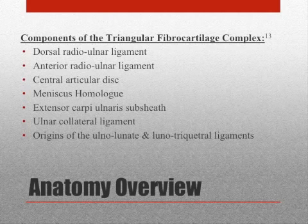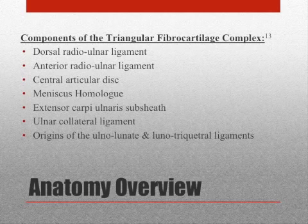The anatomical components of the TFCC include the dorsal and anterior radial ulnar ligaments, the central articular disc, the meniscus homolog, the extensor carpi ulnaris subsheath, the ulnar collateral ligament, and origins of the ulnolunate and lunotriquetral ligaments. As you can imagine, since there are so many components to the TFCC, there's a multitude of types of injuries that can occur there.